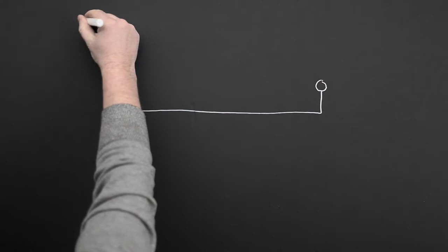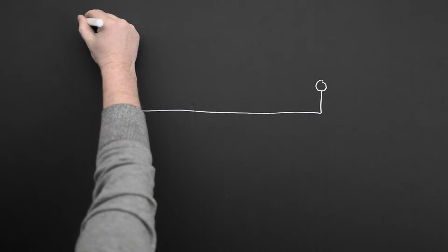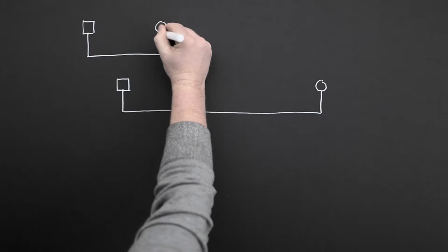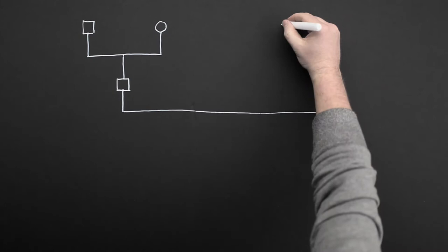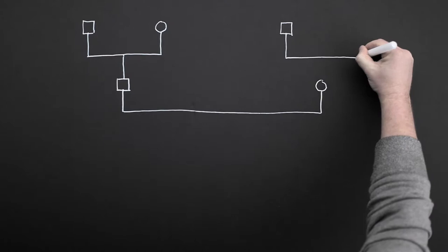Let's begin with a basic genogram by mapping out three to four generations of our nuclear family. In the next video, we will include family additions such as remarriage or stepfamily and add the symbols for relational patterns. Because of that, we recommend you start in pencil, then trace back over it in pen when you're done.